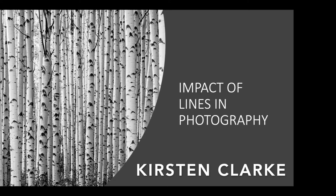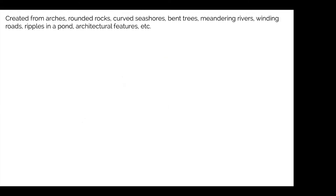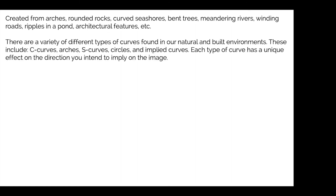Now we come to curved lines, which can be created from arches, rounded rocks, curved seashores, bent trees, meandering rivers, winding roads, ripples in a pond, architectural features, and more. There are a variety of different types of curves found in our natural and built environments, including C-curves, arches, S-curves, circles, and implied curves. Each type of curve has a unique effect on the direction you intend to imply in the image.